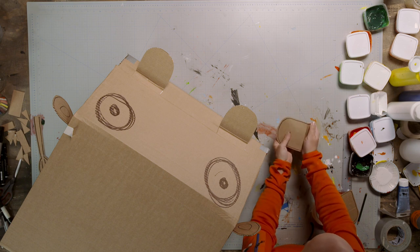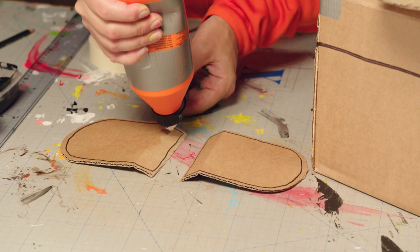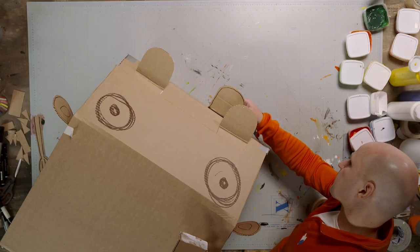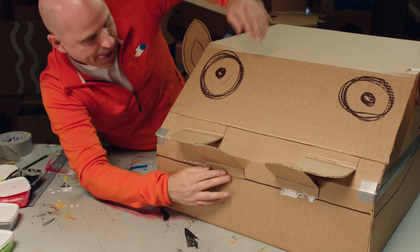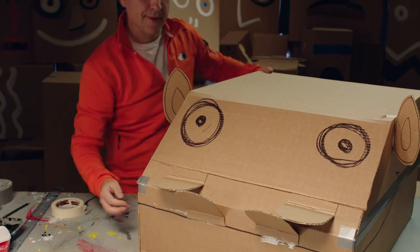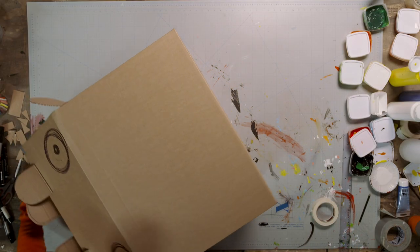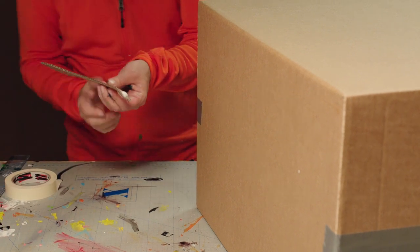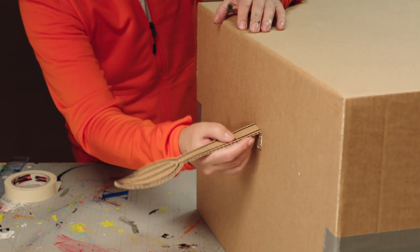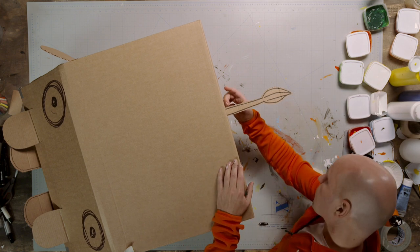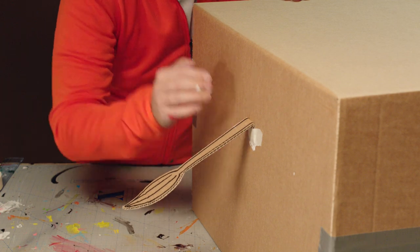Continue with the teeth. They go just above the mouth and a little closer together than the nostrils. Finally, stick the tail on the back. A small bit of tape and it'll stick.